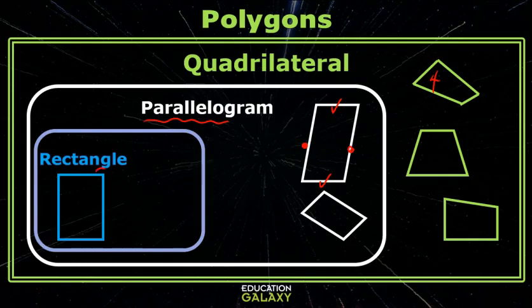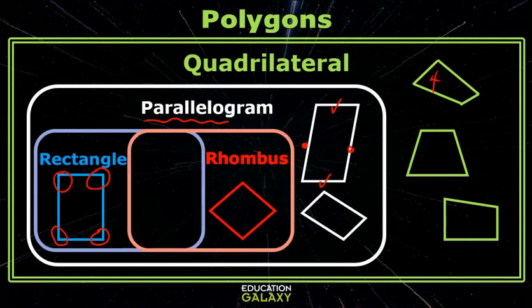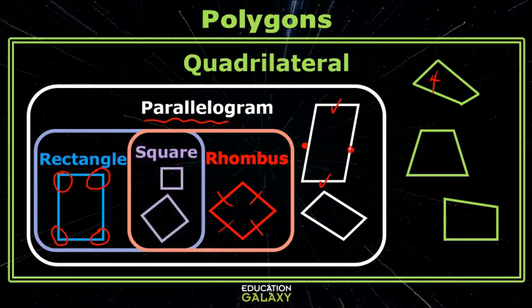If the parallelogram has four right angles, which we sometimes call square corners, then it is a rectangle. If the parallelogram has four congruent sides, it's called a rhombus. And if the parallelogram has four congruent sides and four right angles, it's called a square.